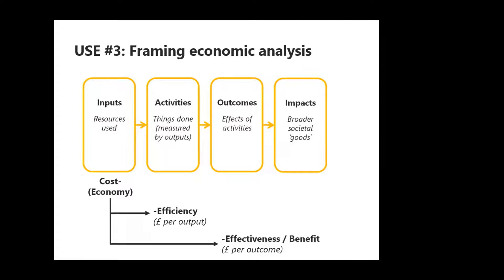Use three is in framing economic analysis. Looking at the basic logic model — inputs, activities, outcomes, and impacts — when you've defined inputs, you can do a test of economy. When you've defined inputs and activities, you have a measure of cost efficiency: pounds per output or resource use per output. And at a more advanced level, by defining inputs and outcomes, you can frame a cost benefit or cost effectiveness analysis — looking at pounds per outcome or pounds per benefit achieved.